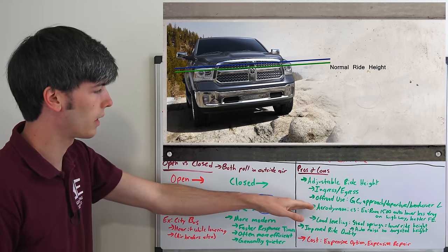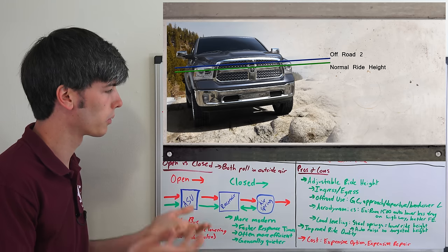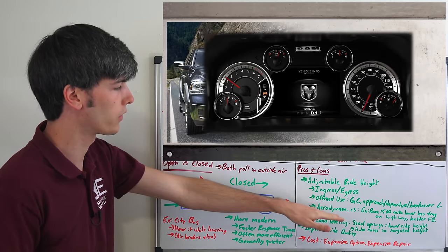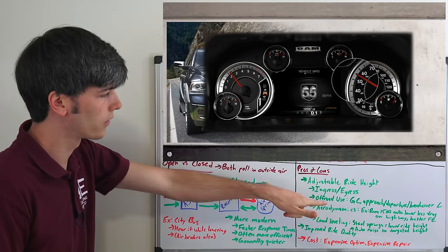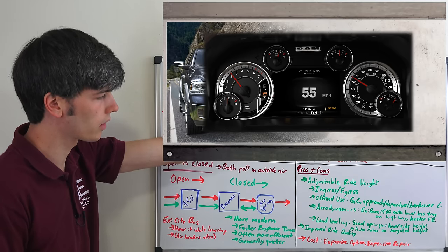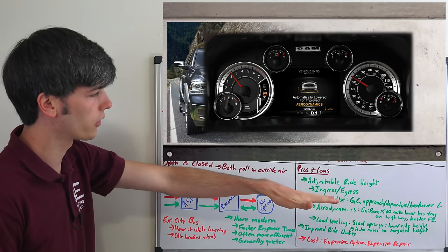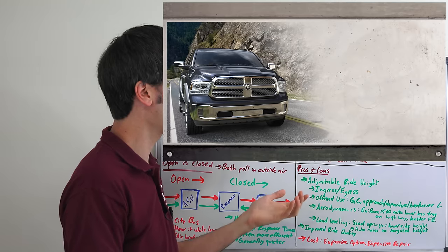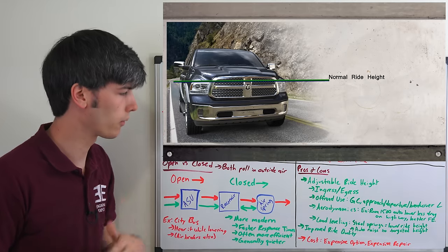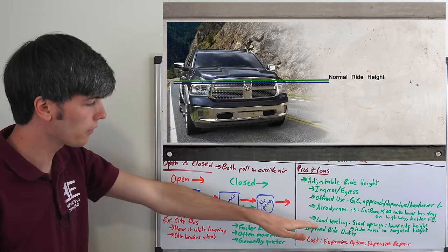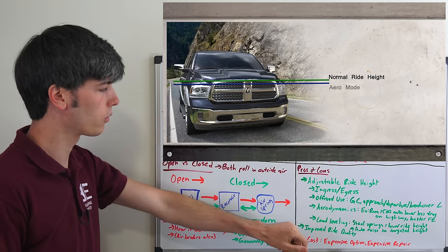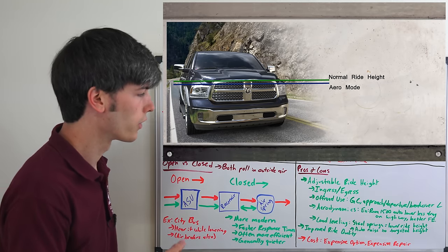Also for aerodynamic benefits so you can lower the vehicle. This is something the Ram 1500 does. It'll automatically lower down if you have the air suspension while you're driving on the highway to reduce drag and get better fuel economy.